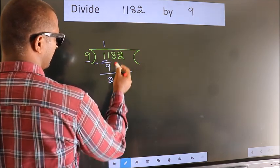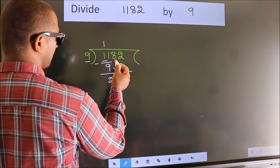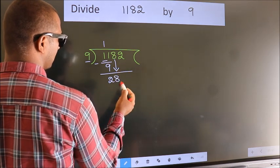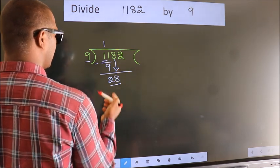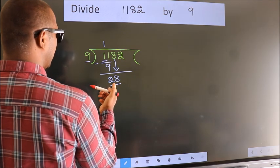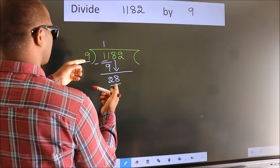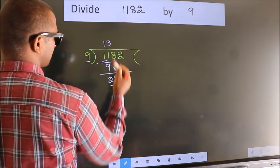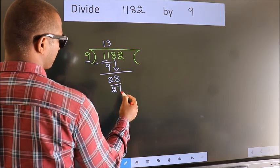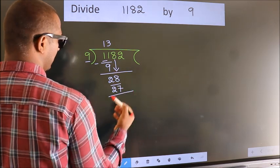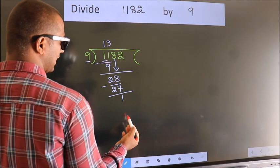After this, bring down the beside number. So 8 down, making 28. A number close to 28 in the 9 table is 9 times 3 equals 27. Now we subtract. We get 1.